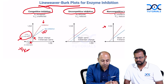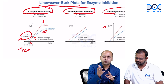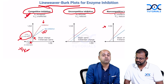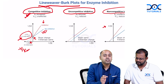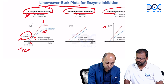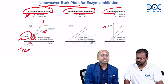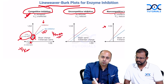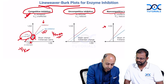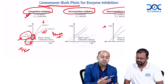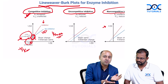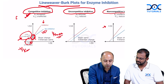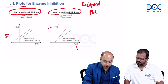For competitive inhibition: there is a change only in Km; Vmax remains the same. Therefore, the y-axis intercept (1/Vmax) remains the same — no change on the y-axis. However, because Km is changing, the −1/Km value also changes, so we see a change on the x-axis. No change on the y-axis but change on the x-axis indicates competitive inhibition.